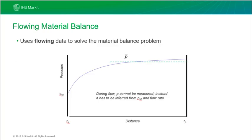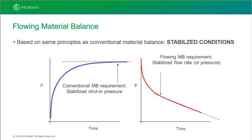First, let's take a look at what the pressure profile looks like when a well is flowing — this is really the basis of the flowing material balance. We can't measure the average reservoir pressure while the well is flowing; we can only measure the pressure at the wellbore. However, based on the flowing pressure and the rate the well is producing at, we can infer what the average reservoir pressure is — that's really what the flowing material balance is all about. For the FMB, stabilisation occurs while the well is flowing and we need to flow the well long enough using data representative of stabilised flow. The length of time required for this is based on hydraulic diffusivity and is determined by permeability, porosity, viscosity and compressibility.